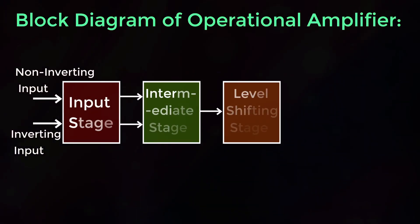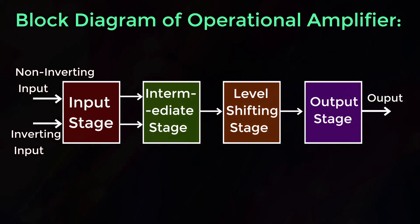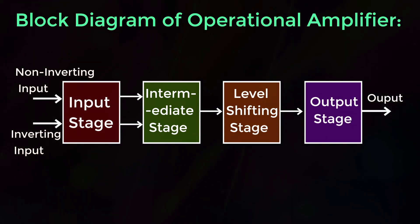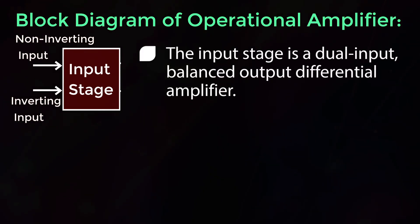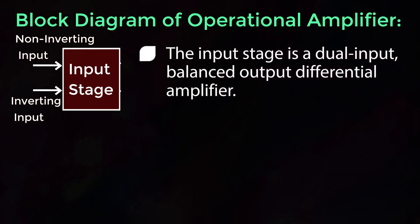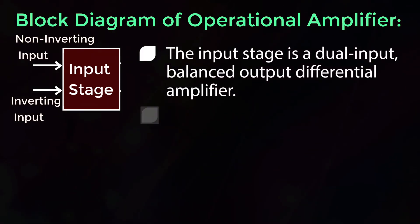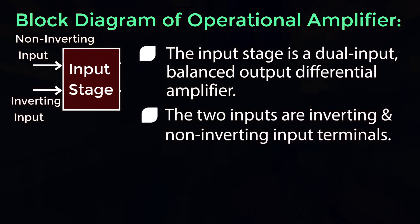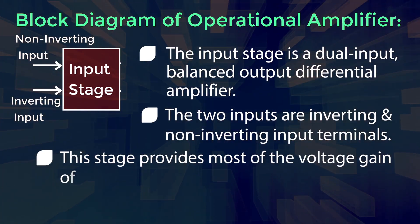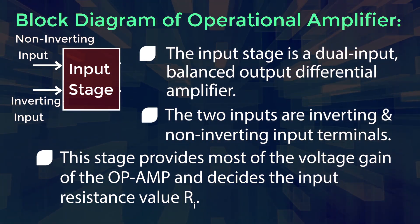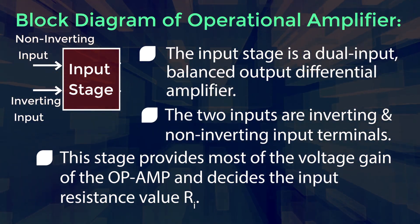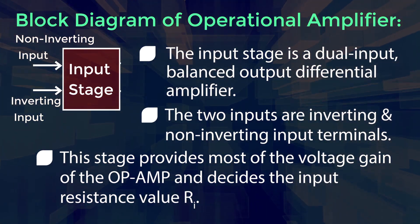Block Diagram of Operational Amplifier — Input Stage: The input stage is a dual input, balanced output differential amplifier. The two inputs are the inverting and non-inverting input terminals. This stage provides most of the voltage gain of the Op Amp and decides the input resistance value R.